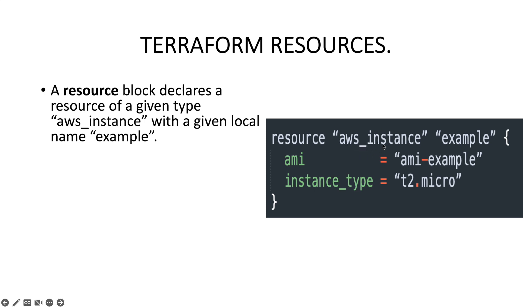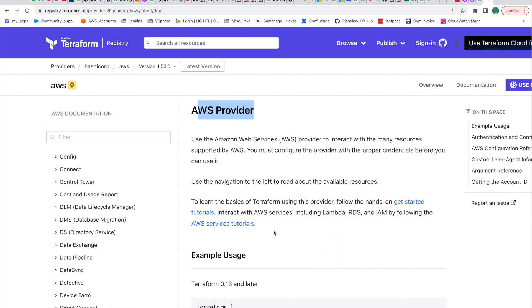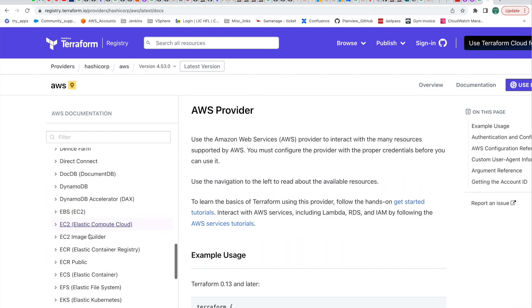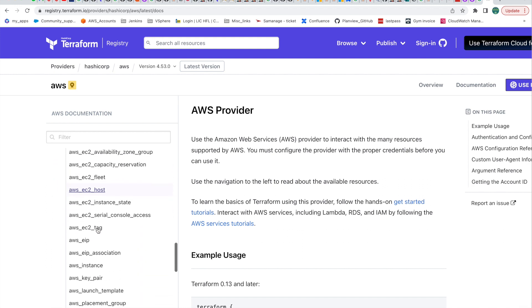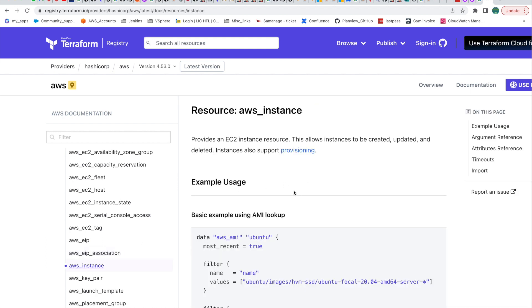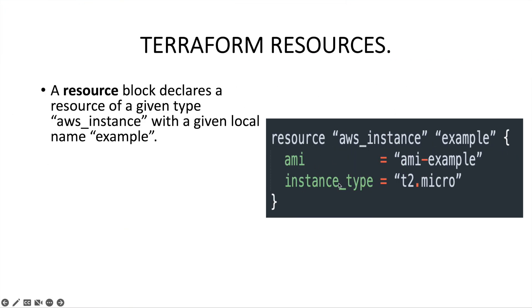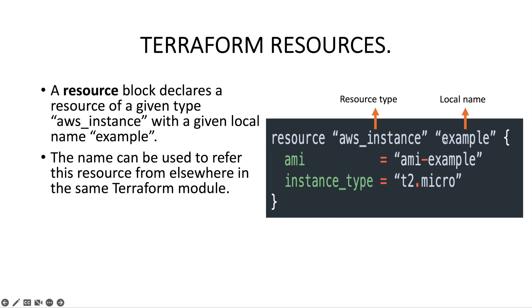Your resource block declares a resource of a given type. In this case, the resource type is aws_instance. If you're unsure of the name to use, you can find it in the documentation — for example, under EC2 on the left-hand side you can see aws_instance for creating an EC2 instance. The resource block has two parts: the resource type, which is defined by Terraform, and a local name, which is user-defined and can be whatever you want.